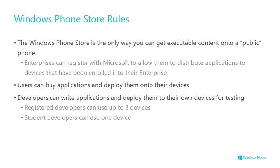There is no sideloading onto a consumer phone. The exception is enterprises who have registered as enterprise publishers and sign apps with their own digital signature — phones receiving those apps must be enrolled in that enterprise. With the Application Deployment tool you can install a XAP onto a developer-unlocked phone, subject to a maximum of 10 at any one time. For normal consumer phones, the only way to get apps is buying from the store.